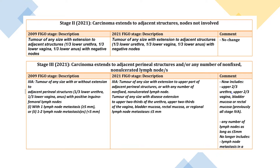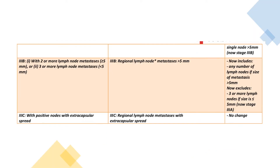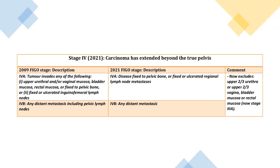Stage 3 is carcinoma extending to adjacent perineal structures and/or any number of non-fixed, non-ulcerated lymph nodes. 3A is tumour of any size with extension to upper adjacent perineal structures or with any number of non-fixed, non-ulcerated lymph nodes — including extension to the upper two-thirds of the urethra, upper two-thirds of the vagina, bladder mucosa, rectal mucosa, or regional lymph node metastases less than or equal to 5 mm. 3B is regional lymph node metastases greater than 5 mm. 3C is regional lymph node metastases with extracapsular spread. Stage 4A is disease fixed to the pelvic bone or fixed/ulcerated regional lymph node metastases. Stage 4B is any distant metastases.